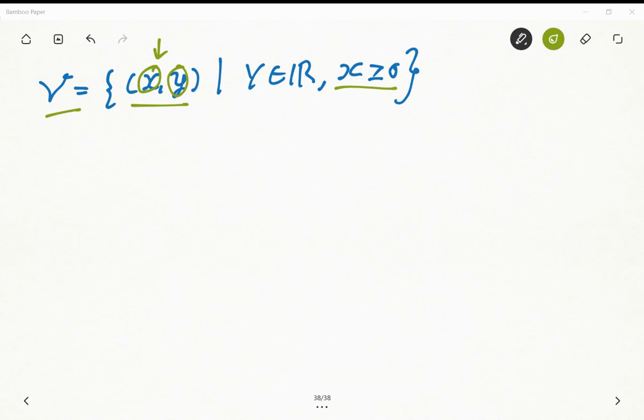So we need to show whether V is or is not a vector space. In this case in particular it is not, I'm going to show why.